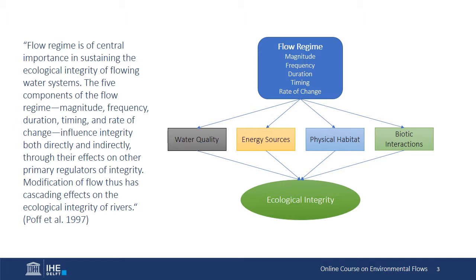The ecologically relevant components of a flow regime are magnitude, frequency, duration, timing, and rate of change of flows. Magnitude is the amount of water, and frequency is how often a given magnitude occurs. Duration is the period of time during which a magnitude persists, whether high or low. Timing refers to when a given flow occurs within different timescales, especially the predictability or regularity — for example, a large flood occurring each year at more or less the same time. Rate of change refers to how quickly flow levels change from one magnitude to another.